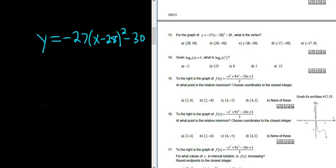So to do this problem, there is a simple formula. If you have y equals a(x minus h) squared plus k, sometimes this is called the standard form of a parabola.